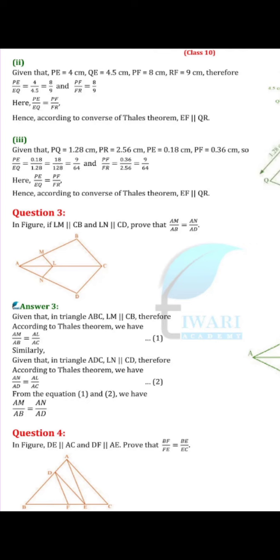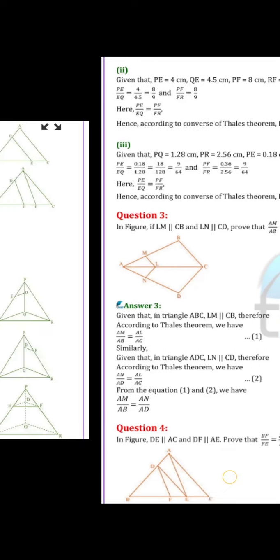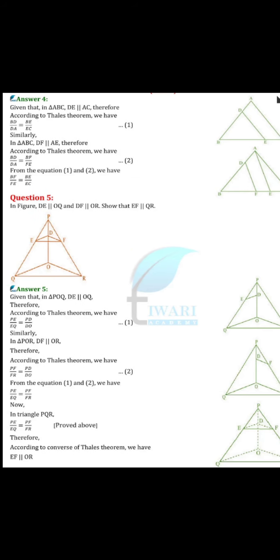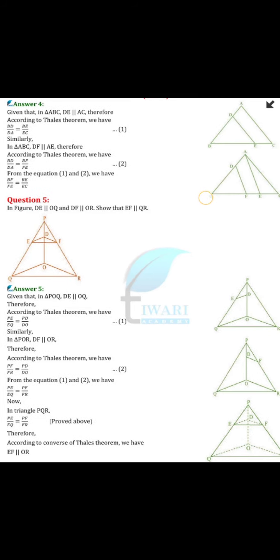In question number 4, DE is parallel to AC and DF is parallel to AE. Prove that BF upon FE equals BE upon EC. In the first triangle, since DE is parallel to AC, apply Thales theorem: BD upon DA equals BE upon EC. Similarly in triangle ABC, since DF is parallel to AE, apply Thales theorem: BF upon FE equals BD upon DA. Since both equal BD upon DA, comparing both equations gives BF upon FE equals BE upon EC.